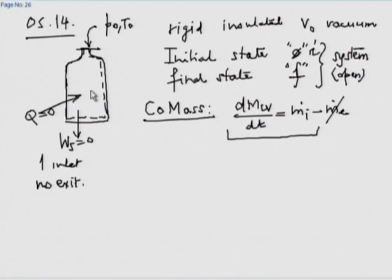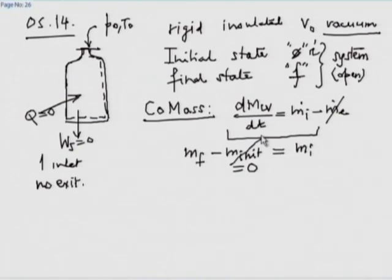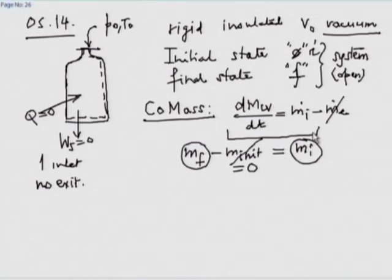When the flow stops, the outer pressure will equal the inner pressure. Integrating gives: mass of the final state in the bottle minus mass at the initial state equals the mass which has entered. The initial mass is zero because it is vacuum. So we get the final mass equal to the mass which has entered — trivial, because if initially it contains nothing and nothing goes out, what goes in is what is there.